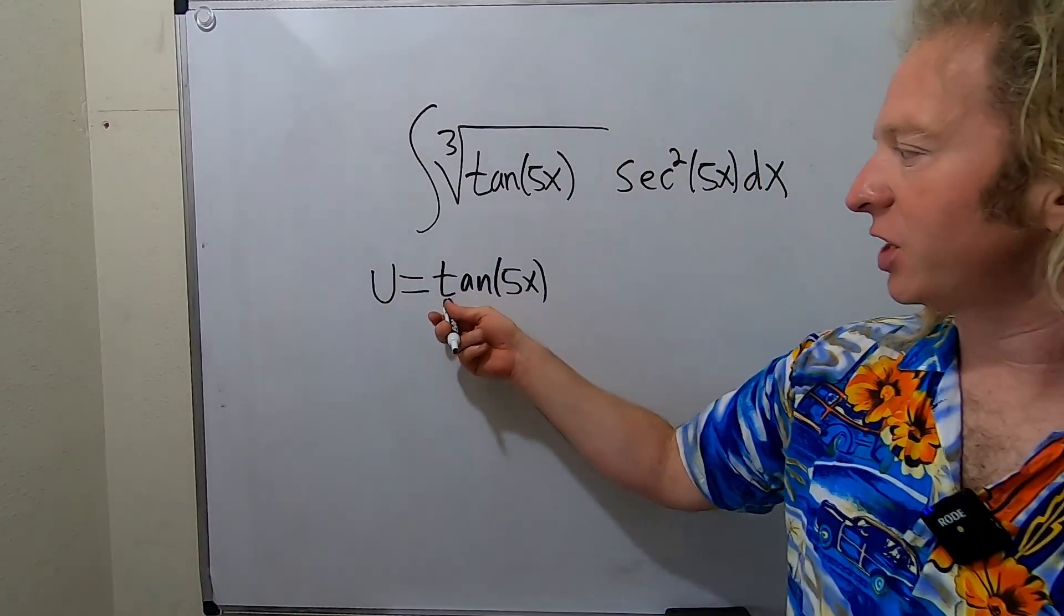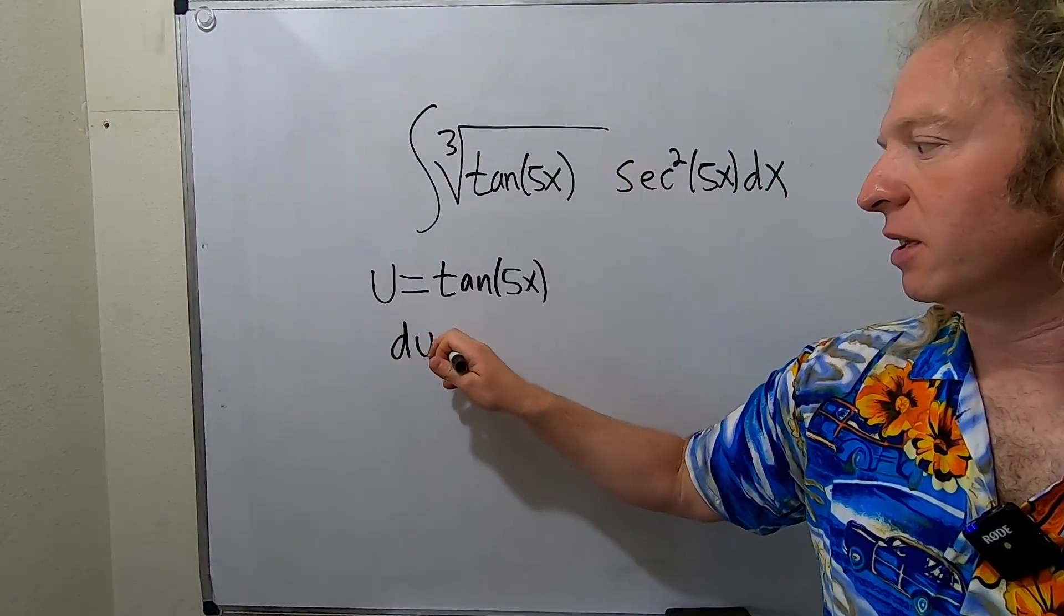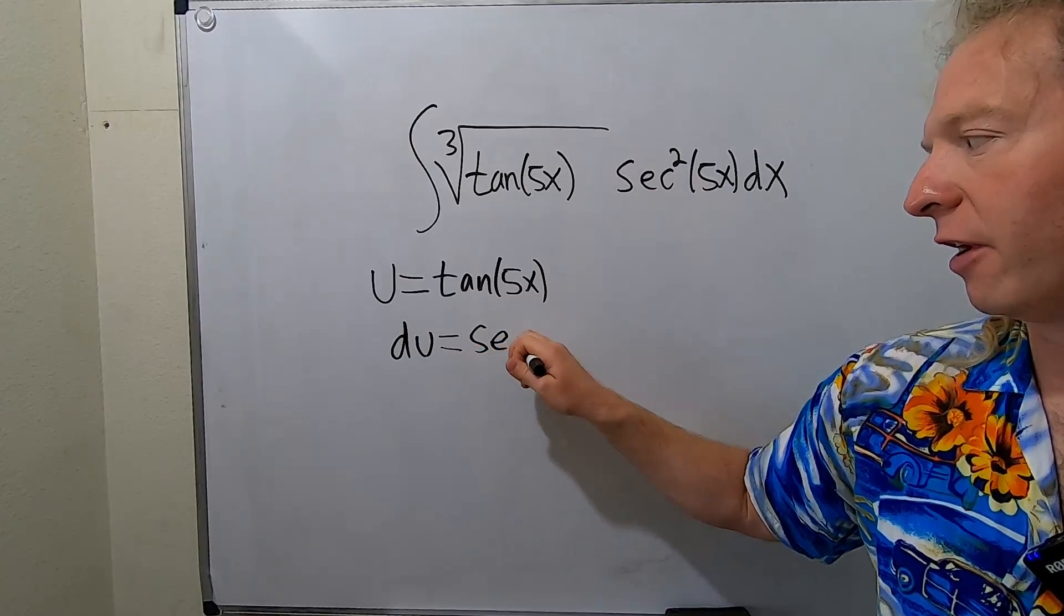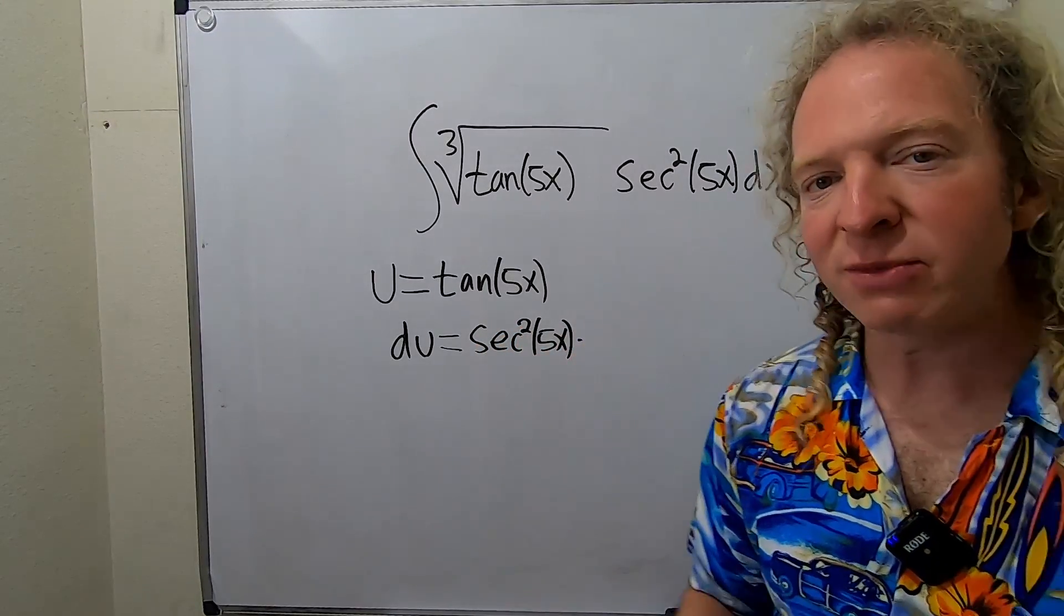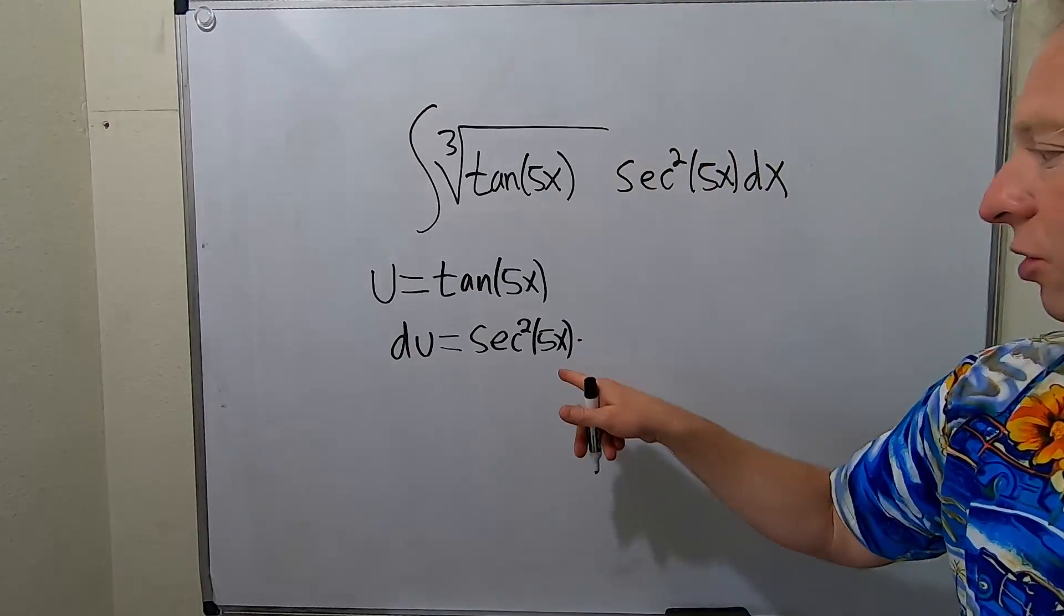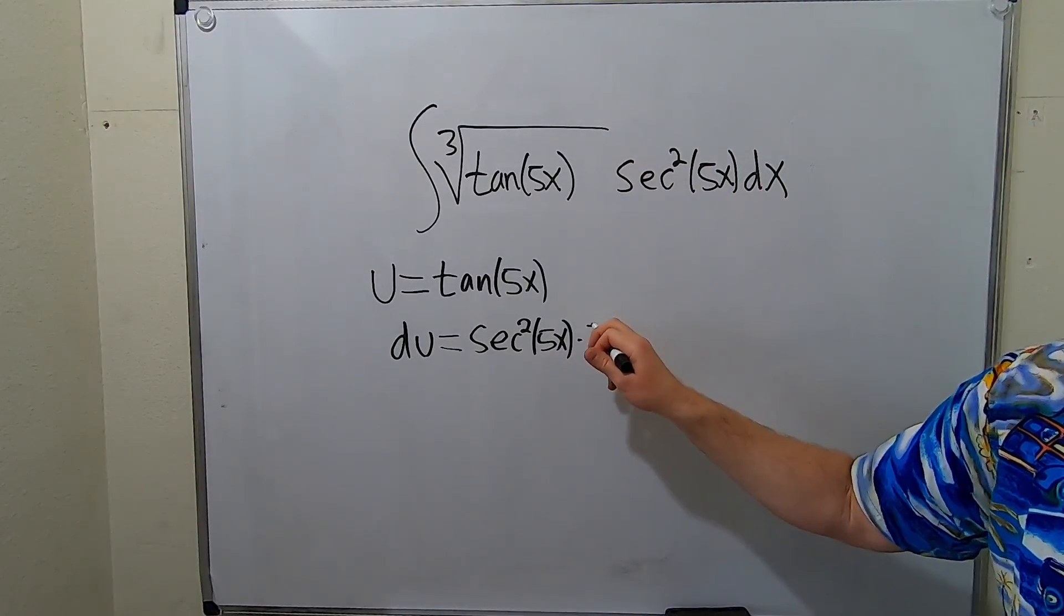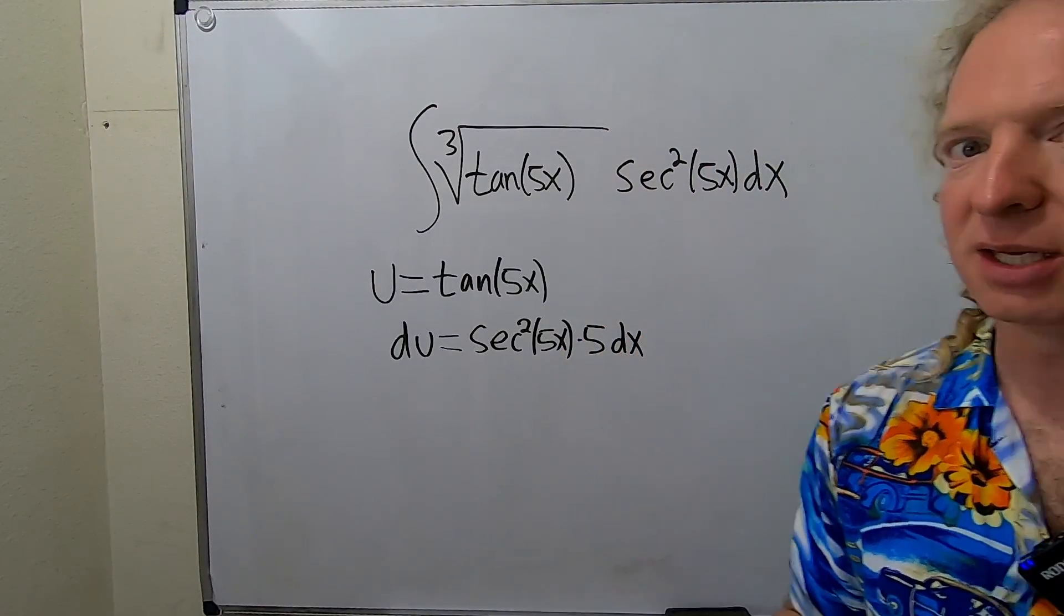So the derivative of tangent is secant squared. So here it's tangent of 5x. So the derivative will be secant squared of 5x times the derivative of the inside. That's the chain rule. So the derivative of 5x is simply 5, and then we have the dx.